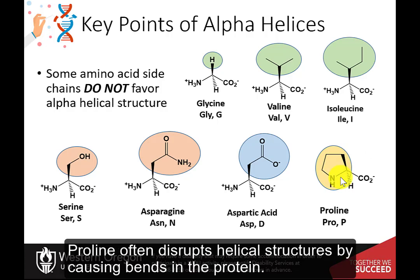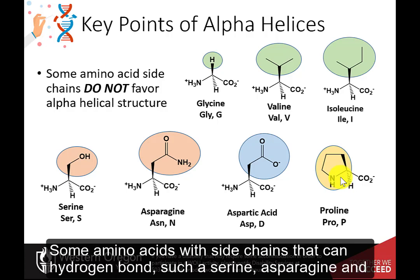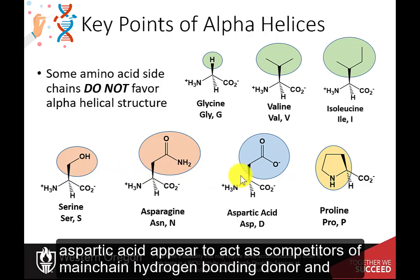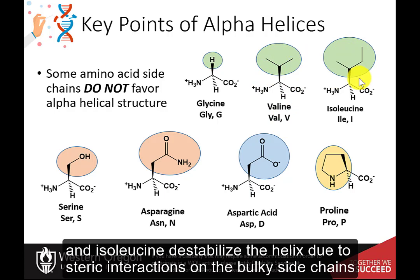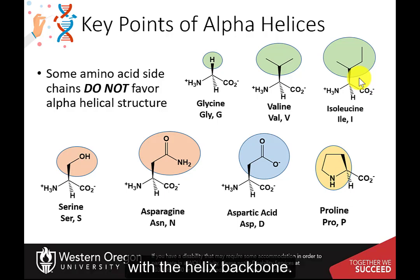Proline often disrupts helical structures by causing bends in the protein. Some amino acids with side chains that can hydrogen bond, such as serine, asparagine, and aspartic acid, appear to act as competitors of main chain hydrogen bonding donors and acceptors and destabilize the alpha helices. Early branching groups, such as those in valine and isoleucine, destabilize the alpha helix due to steric interactions of the bulky side chains with the helix backbone.